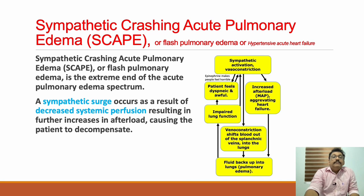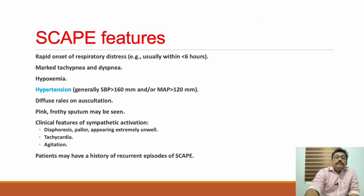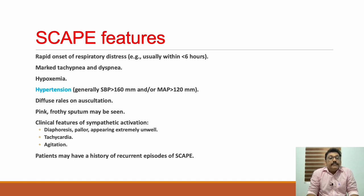SCAPE features include rapid onset of pulmonary edema — that is why it is called flash pulmonary edema — severe tachypnea, dyspnea, hypoxemia, and very importantly, hypertension. Systolic BP can be very high, SBP more than 160, MAP around 120. Bilateral diffuse crepitations and wheezes can be present. Pink frothy sputum may be there in some patients. Patients can have sweating, pallor, tachycardia, agitation, and altered behavior.